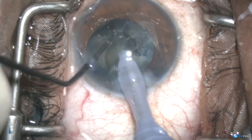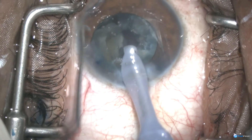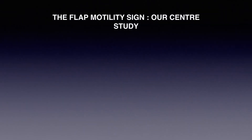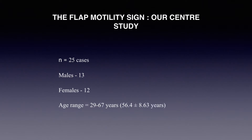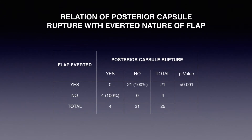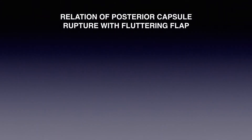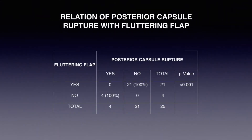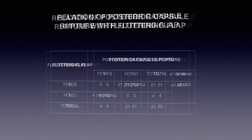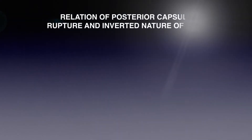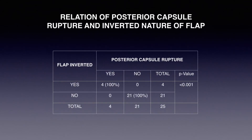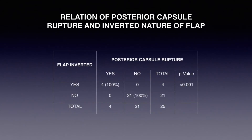Eventually, the classical signs of posterior capsule rupture occurred. In the study of the flap motility sign at our center, 25 cases were included. In the 21 cases wherein the flaps were averted, there was no posterior capsule rupture. Similarly, all flaps which were fluttering did not have a posterior capsule rupture. In all four cases of inverted non-fluttering flaps, there was a posterior capsule rupture.